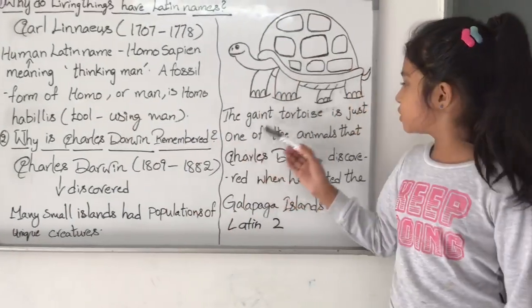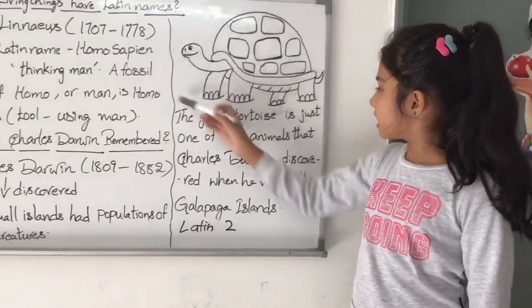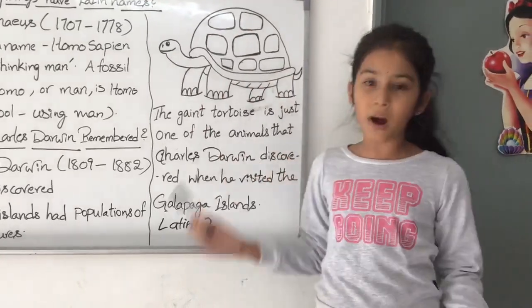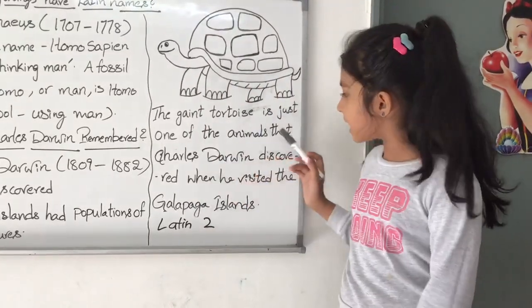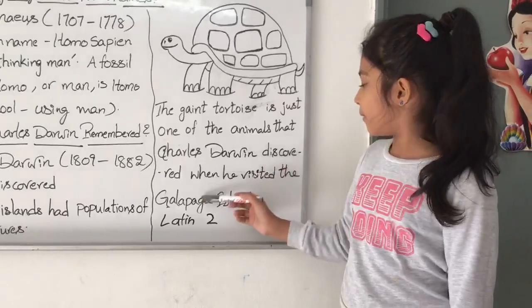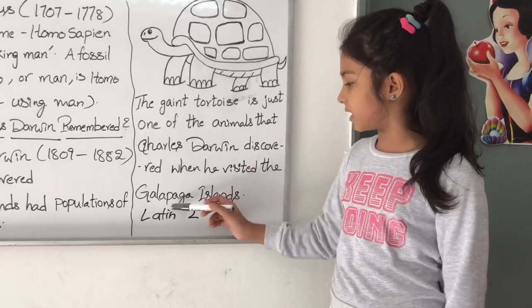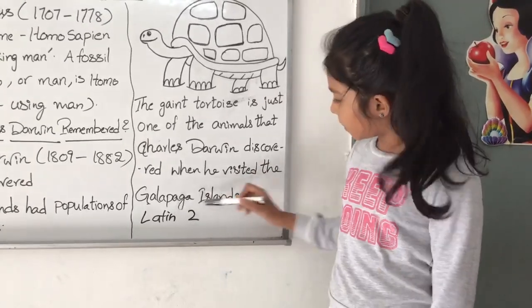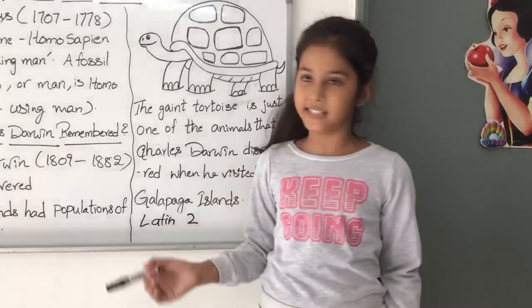The giant tortoise is just one of the animals that Charles Darwin discovered when he visited the Galápagos Islands.